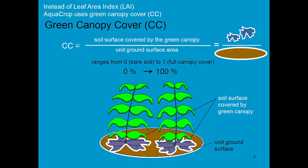You express it per unit ground surface. It varies from 0 when you have a bare soil to 100% if you have full canopy cover. It has many advantages to use the CC, the green canopy cover. First of all, it is very easy to determine, and secondly it also expresses the surface of the crop which receives the energy, energy for transpiration and biomass production.